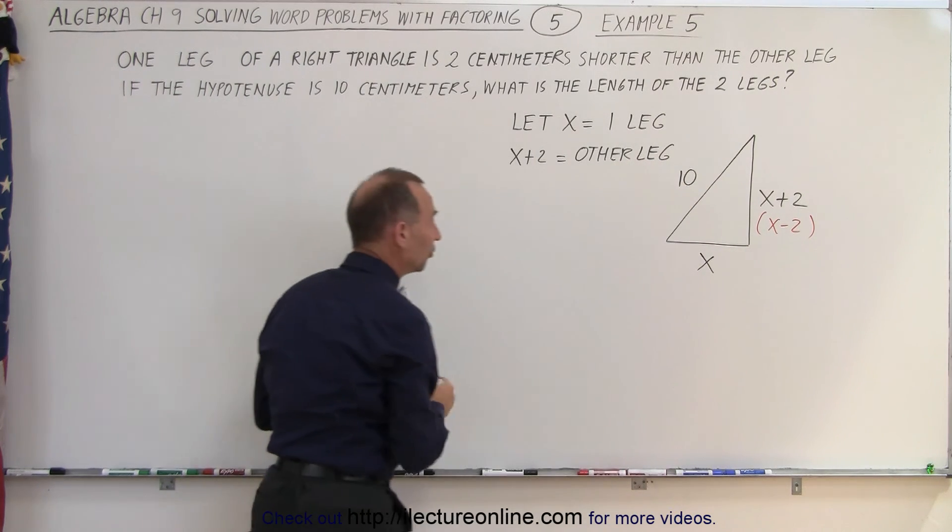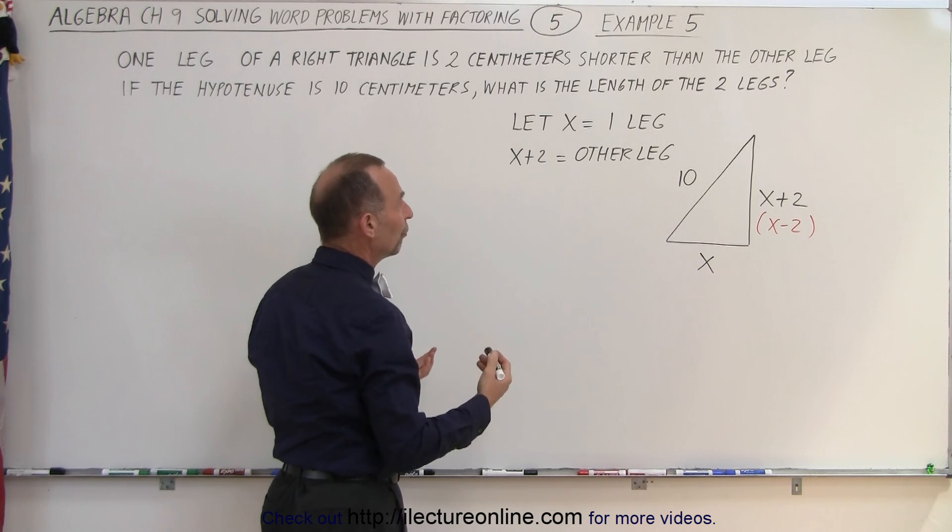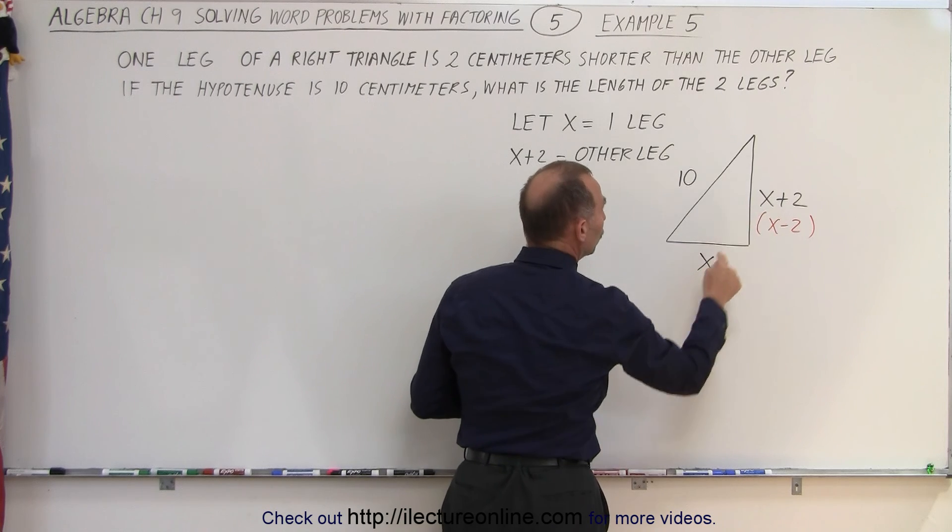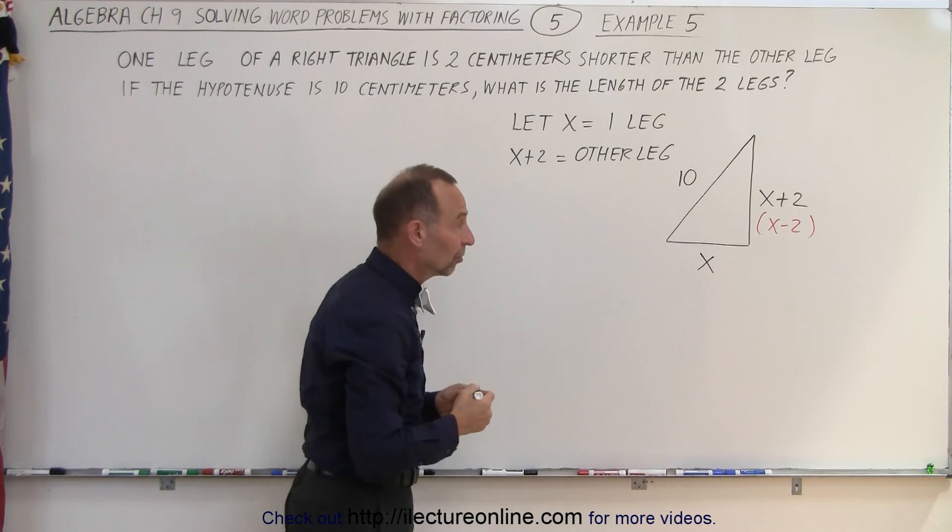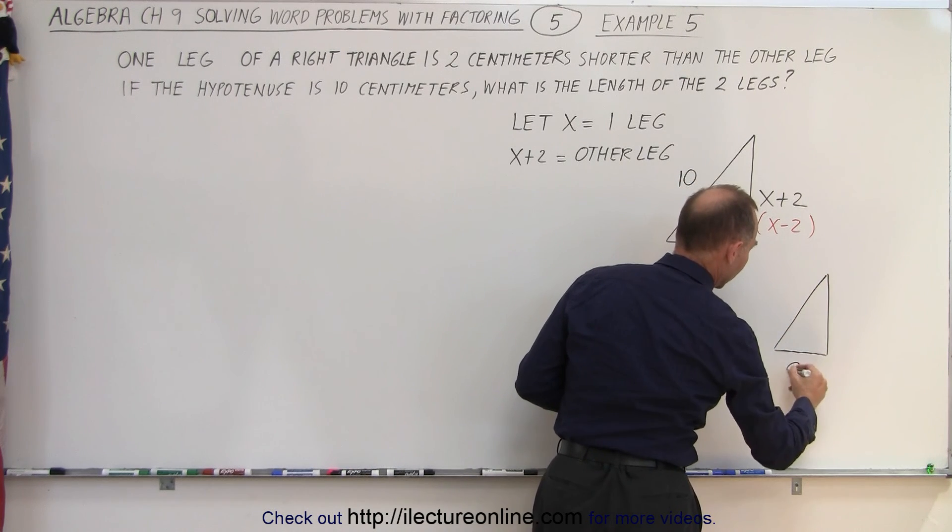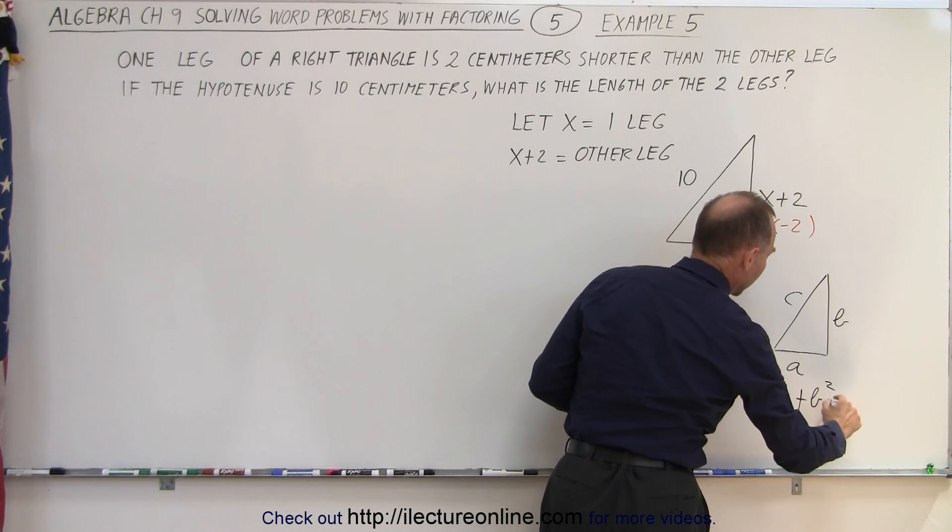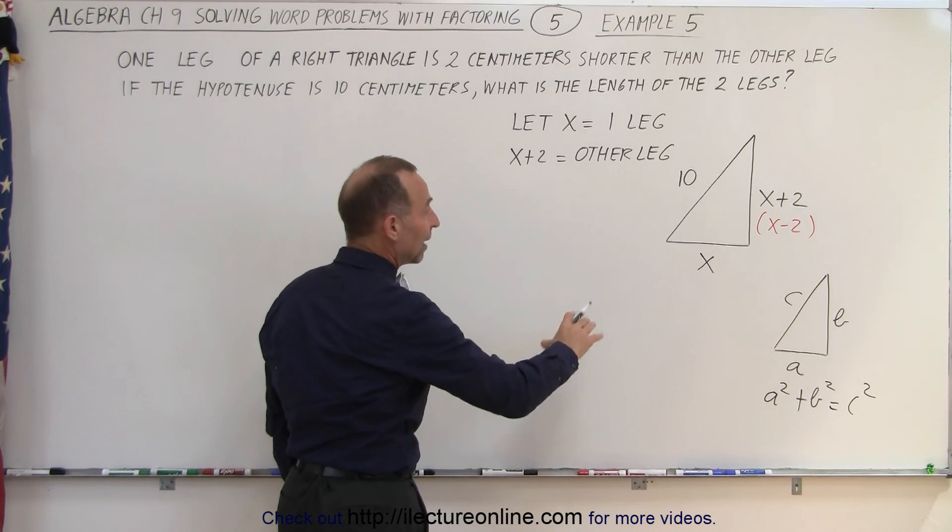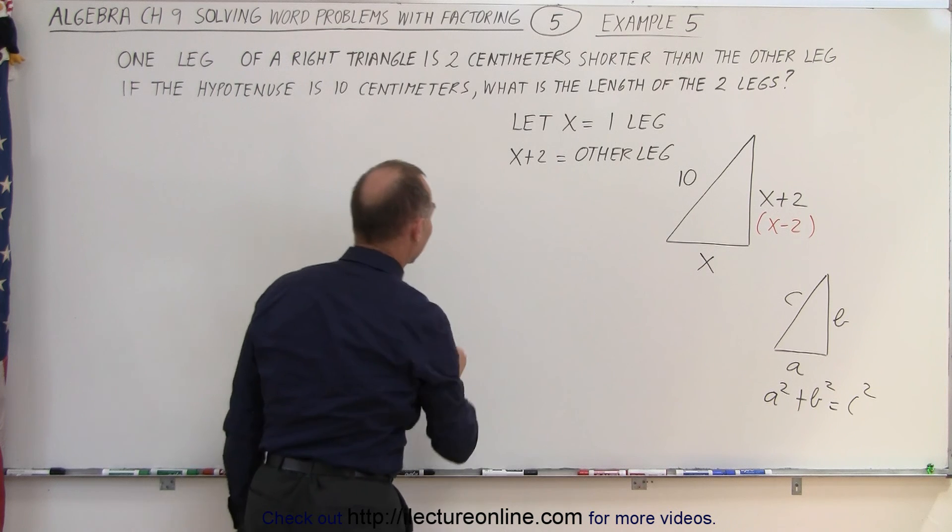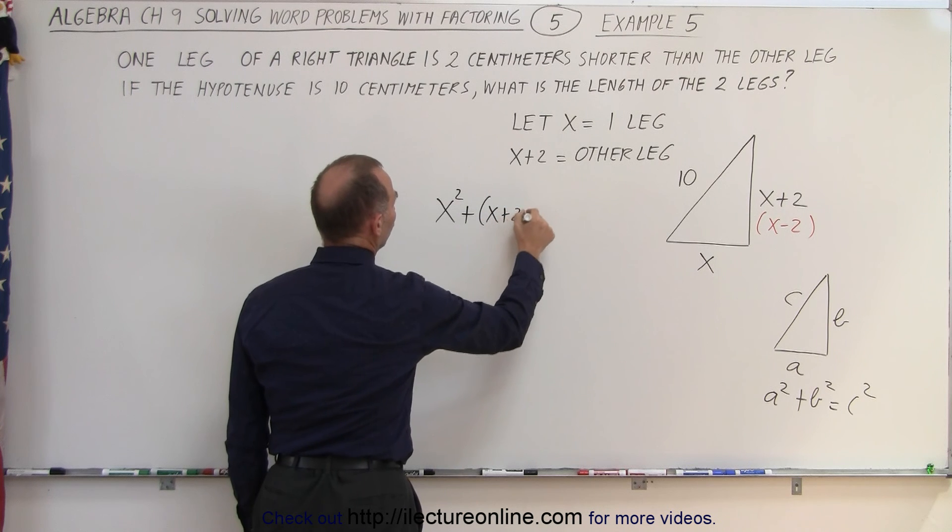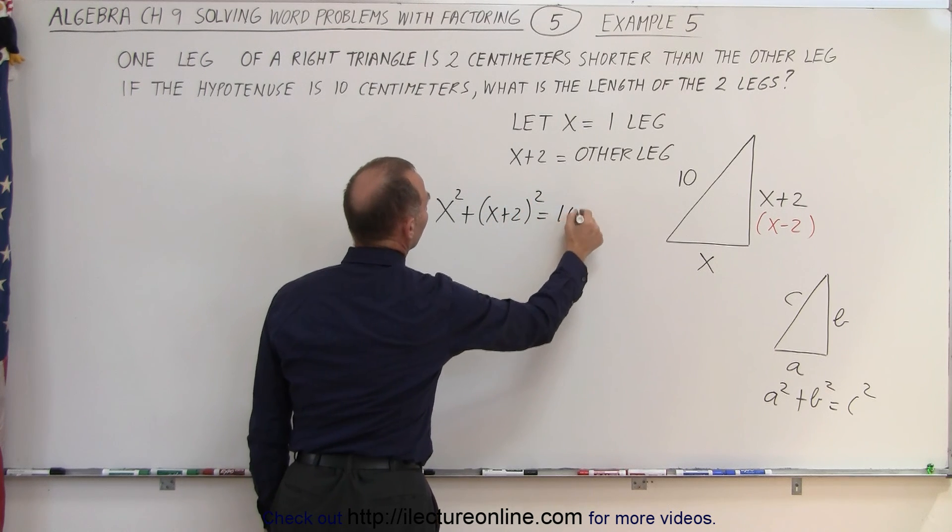So let's do this one first: x and x plus two. Now we know from Pythagorean theorem that the sum of the squares of the two sides equal the square of the hypotenuse. For example, if we have a right triangle with sides a and b and hypotenuse c, we know that a squared plus b squared equals c squared. So we're going to use that same technique, but instead of a, b, and c we have x, x plus two, and ten. So x squared plus (x plus 2) squared equals 10 squared.